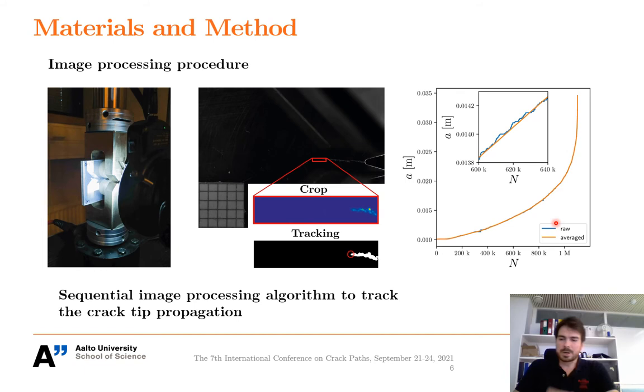So by visually observing the crack advancement during the experiment, we see that the crack advancement is not smooth but occurs in intermediate jumps. This jumpy crack position A can be coarse grained by applying averaging scheme, this is the orange curve, which yield the smooth crack velocity dA over dN, used in Paris plots that I will show later.